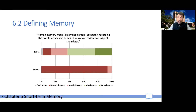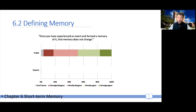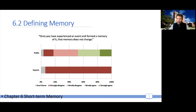If you ask experts, however, the picture is very different — virtually all would disagree with that statement. If you ask people whether, once you have recorded an event and have it in memory, it is crisp and unchanging — close to 50% of people will say yes: once it's encoded, it's there, and what they're accessing later is exactly what was encoded earlier. Again, if you ask experts, they will say that is definitely not the case.